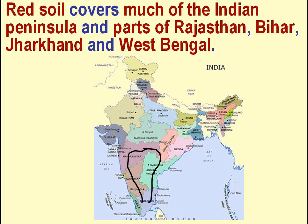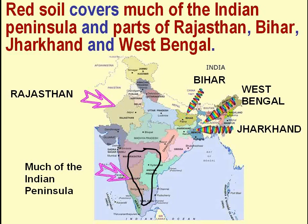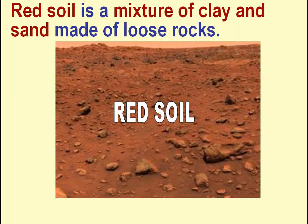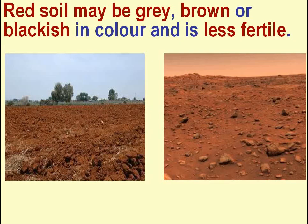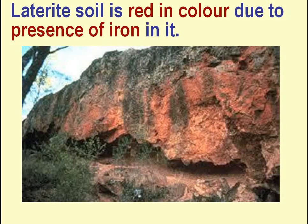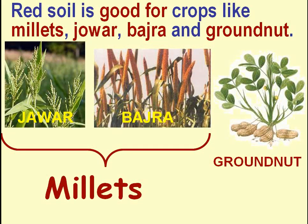Red soil covers much of the Indian peninsula and parts of Rajasthan, Bihar, Jharkhand and West Bengal. It is a mixture of clay and sand made of loose rocks. Red soil may be grey, brown or blackish in colour and is less fertile. Some types of red soil are made of laterite rocks and are called laterite soil, which is red in colour due to the presence of iron in it. Red soil is good for crops like millets, jowar, bajra and groundnut.